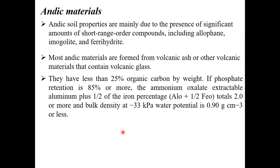Coming to andic material - what does andic mean? The answer is volcanic eruptions. Andic properties are mainly due to the presence of significant short-range-order compounds. Andic materials include allophane, imogolite, and ferrihydrite. Mostly andic materials are formed from volcanic ash and other volcanic materials that contain volcanic glass.